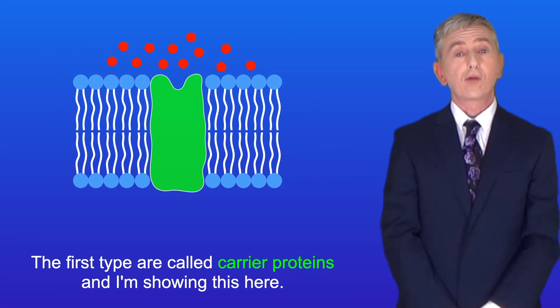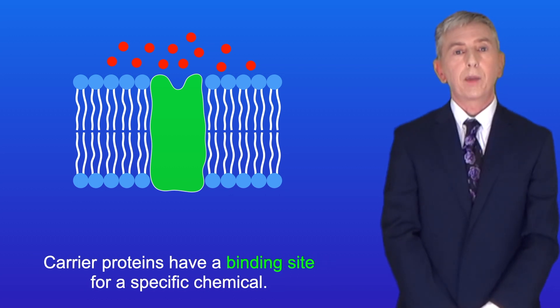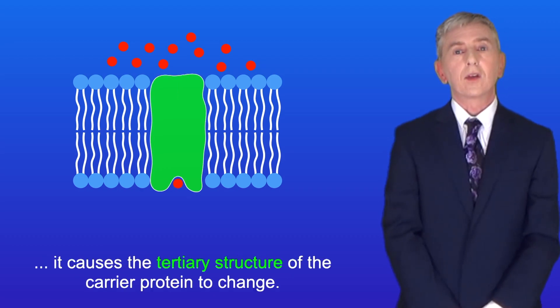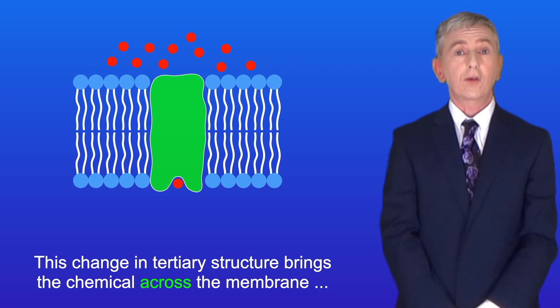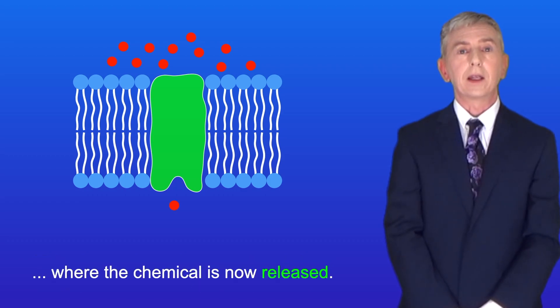The first type are called carrier proteins, and I'm showing this here. Carrier proteins have a binding site for a specific chemical. When that chemical binds, it causes the tertiary structure of the carrier protein to change. This change in tertiary structure brings the chemical across the membrane, where the chemical is now released.